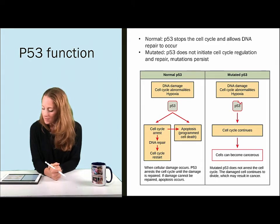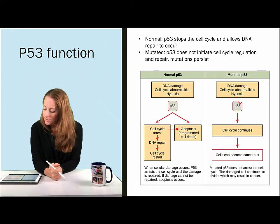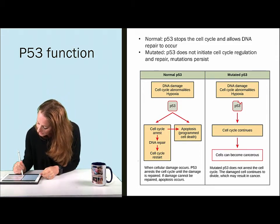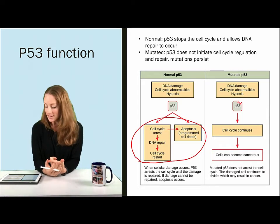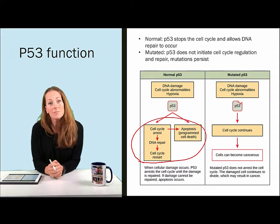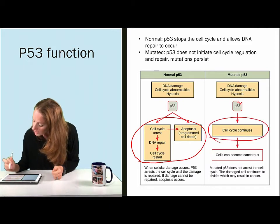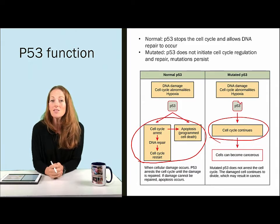Normally, P53 stops the cell cycle and allows DNA repair to occur. It does that by activating a group of genes involved in cell cycle arrest, DNA repair, cell cycle restarting, and apoptosis or programmed cell death. When P53 is mutated or not functioning properly, it cannot regulate those genes, and therefore the cell cycle can continue unchecked, leading to cancer and tumor formation.